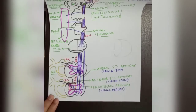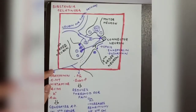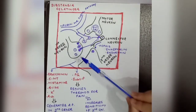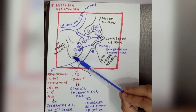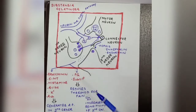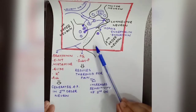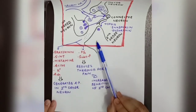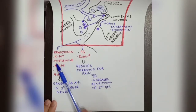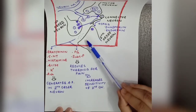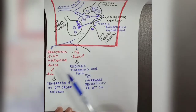Now we learn about the structure called Substantia Gelatinosa in more detail. At the first order neuron termination and second order neuron beginning, substances such as 5-hydroxytryptamine (serotonin), histamine, acids, potassium, and acetylcholine are released. These reduce the threshold for pain and increase the sensitivity of the second order neuron. Substance P also increases second order neuron action potential generation, thereby increasing sensitivity.